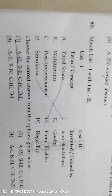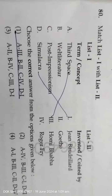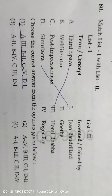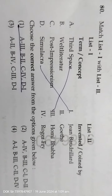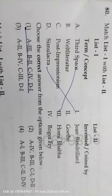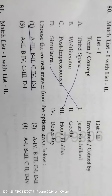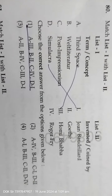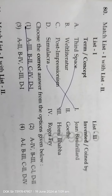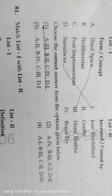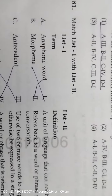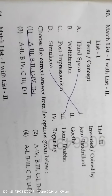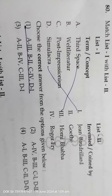Let us see the answer key of English Literature. Eighteenth question: concept and term coined by. 'Third space' — coined by Homi Bhabha. 'Weltliteratur' — coined by Jane Bouldier. Already told it. Answer is correct.